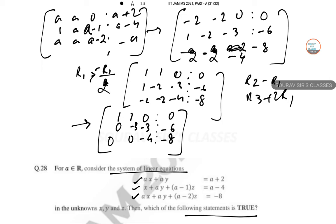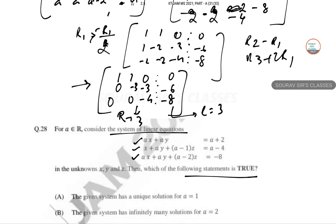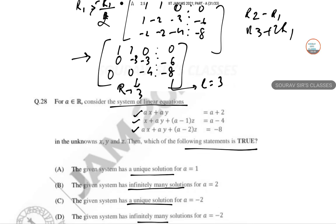So this rank here is 3, and this also rank 3. These are the same, so as a result we can say that the system has unique solutions if a equals minus 2.